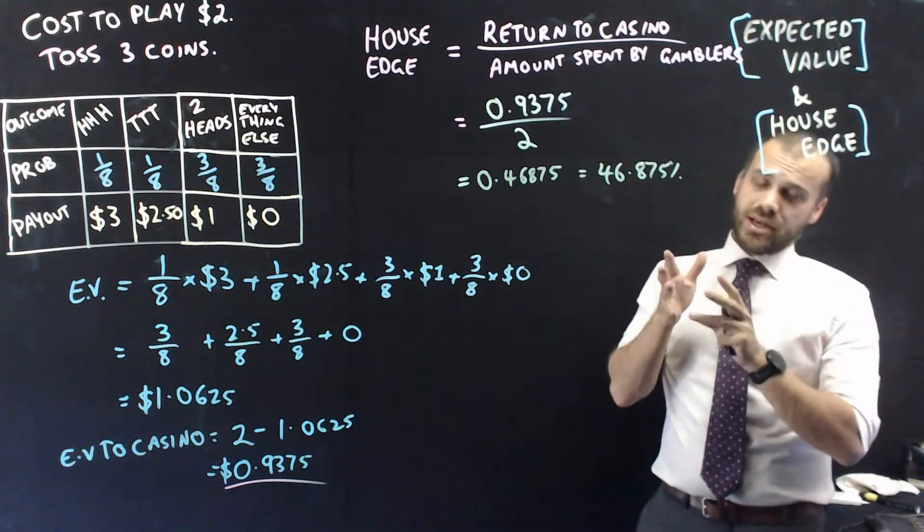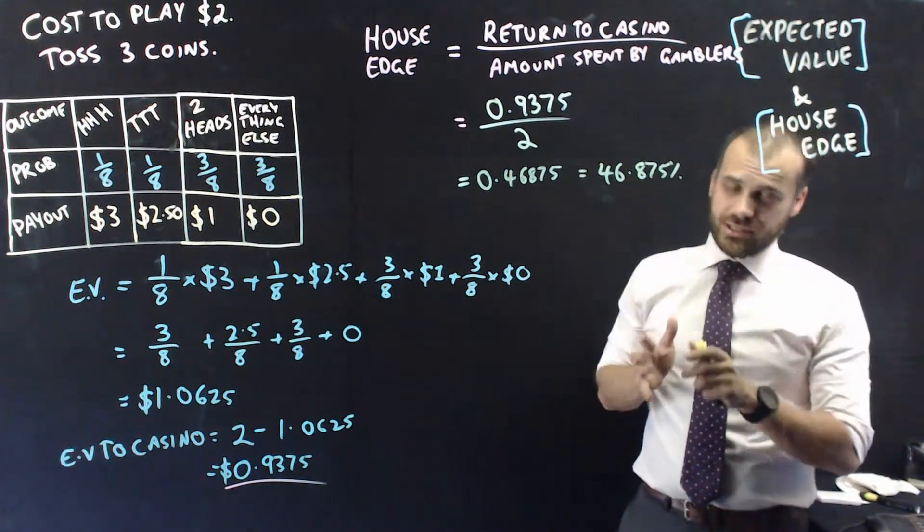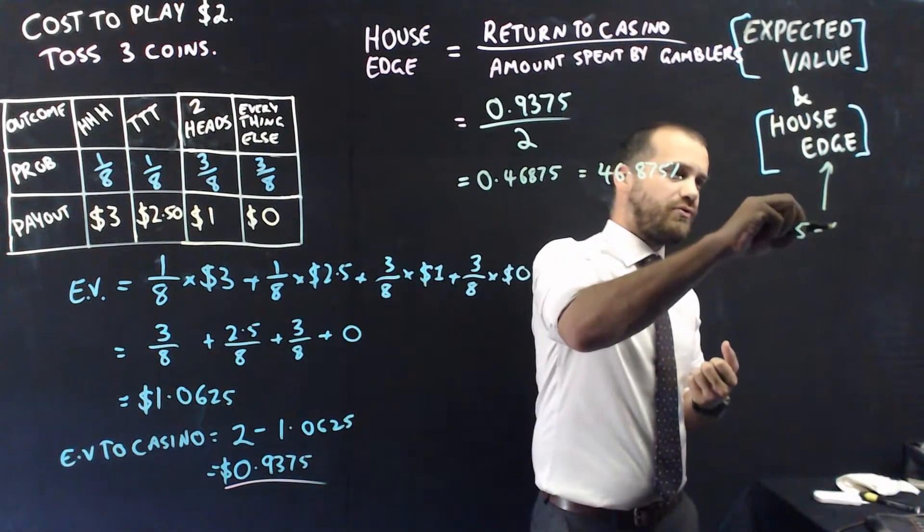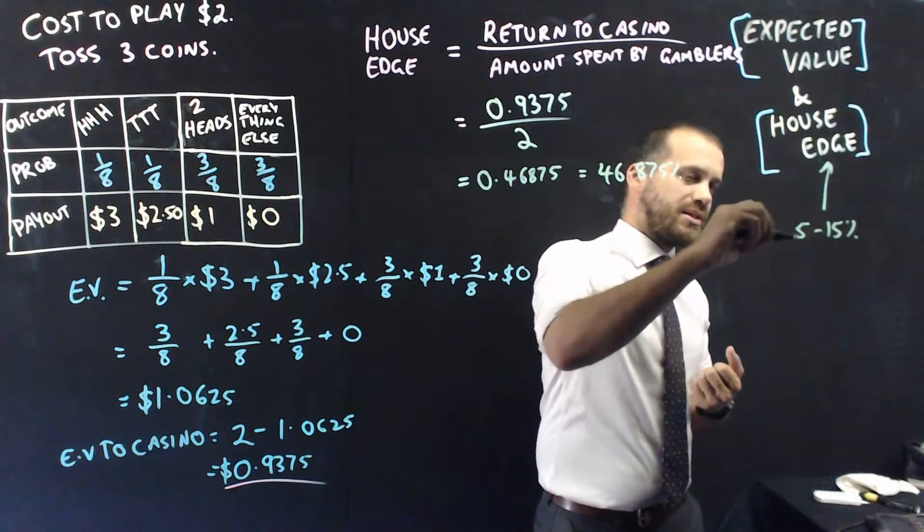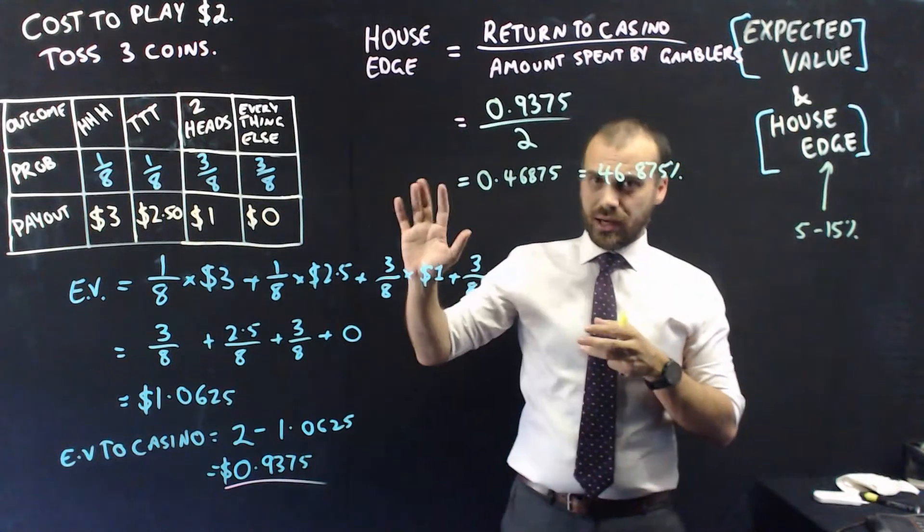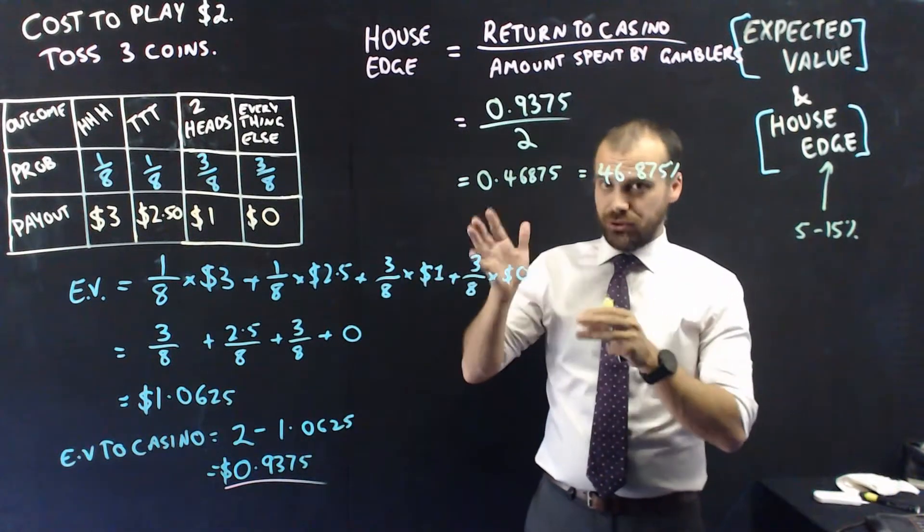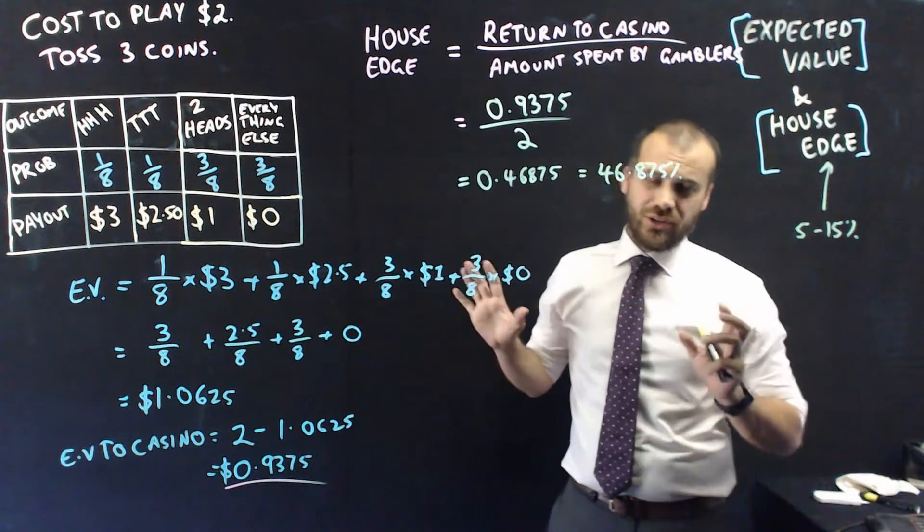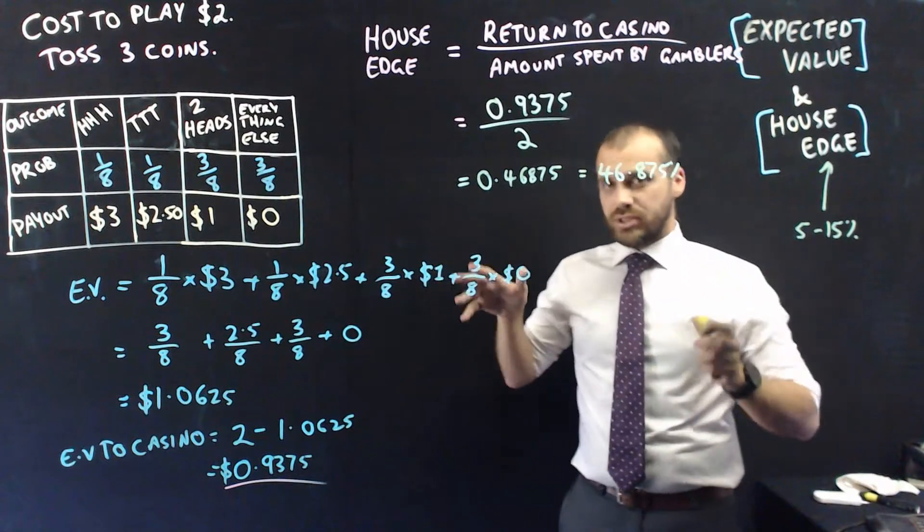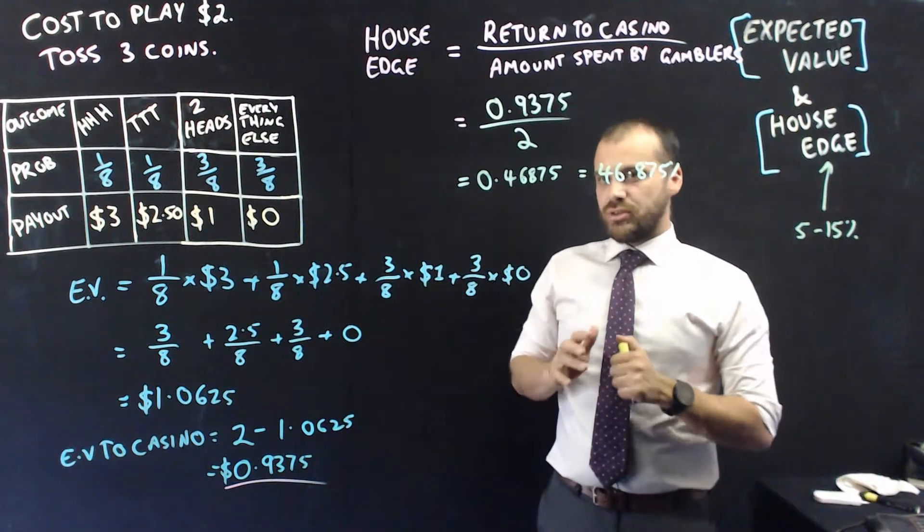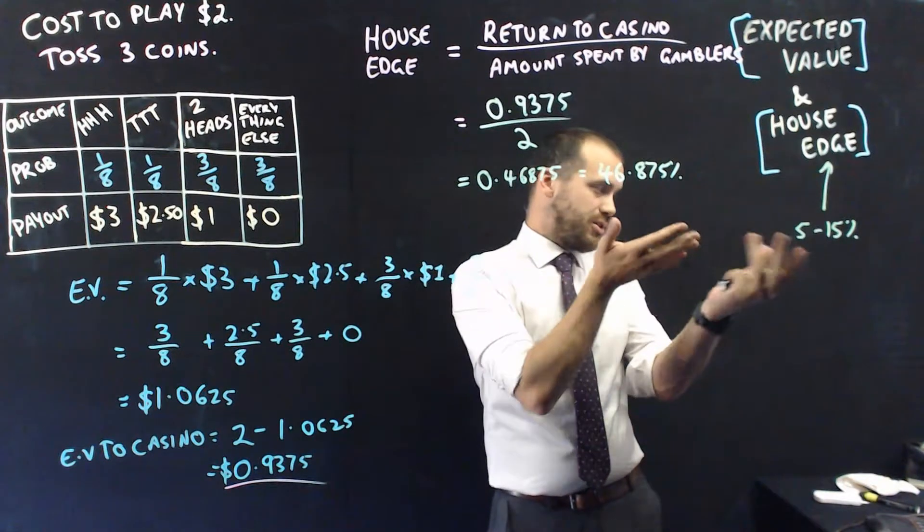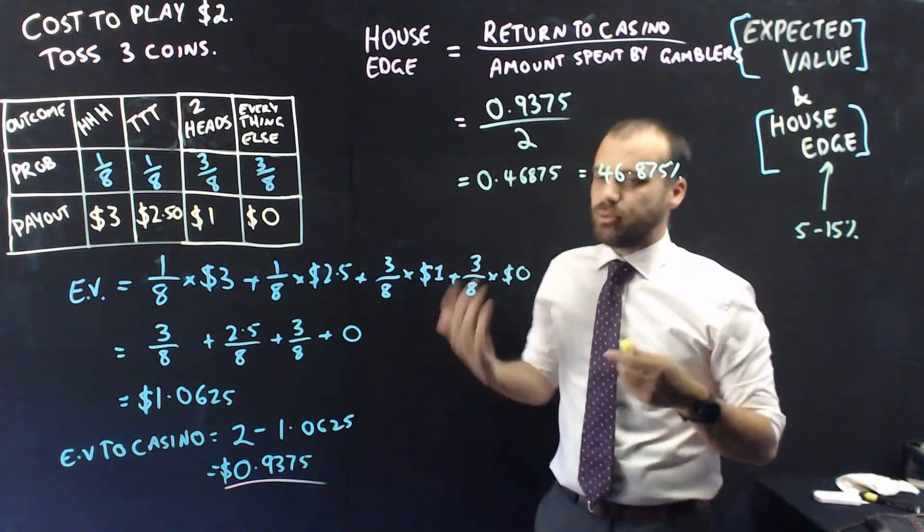46.875%. Now, that's an enormous house edge. In fact, it's a ridiculous house edge. Normally, the house edge is somewhere between like 5% to 15%. A house edge that high, yeah sure it makes money, but people are going to stop playing because they're going to lose money fast. And they're going to go, I don't like this game, I'm going to go find a better game.